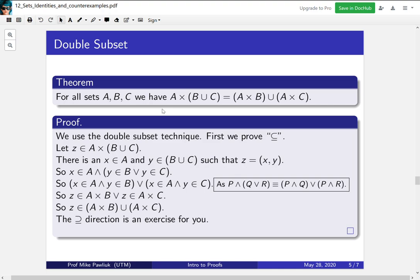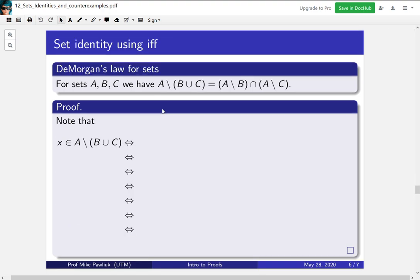Now I want to see one final proof technique, which is not the double subset technique, but it's another way of showing that two sets are equal. Let's start with this theorem, which is called DeMorgan's law for sets, and we'll see why in a moment. It says for sets A, B, and C: A \ (B ∪ C) = (A \ B) ∩ (A \ C). So if you subtract a union, it becomes the intersection of two subtractions. This should remind us of DeMorgan's law.